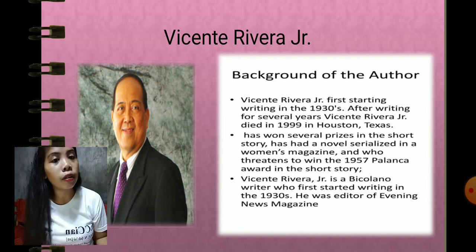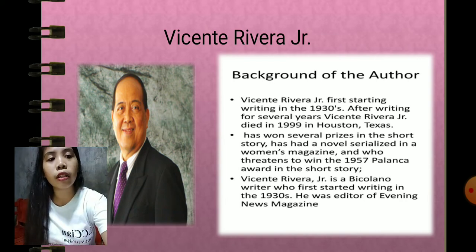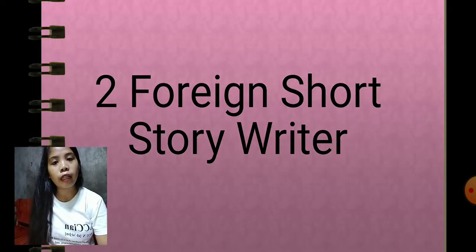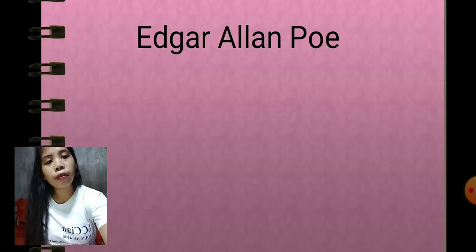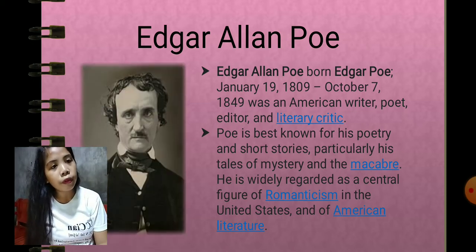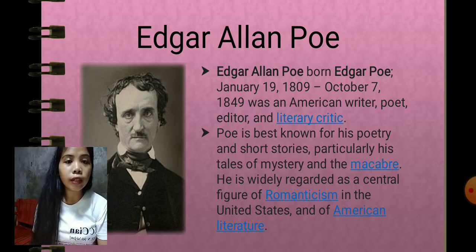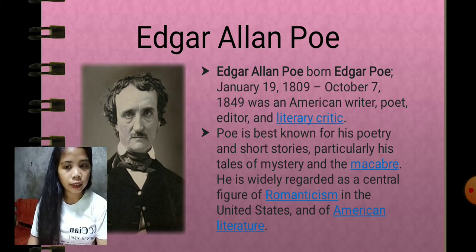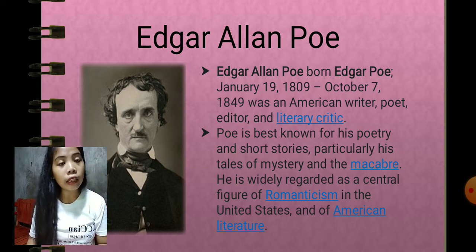We are done with our two local short story writers — Ronnie V. Diaz and Vicente Rivera Jr. Now let's go to our two foreign short story writers. The first one is Edgar Allan Poe. Edgar Allan Poe was born on January 19, 1809, and died on October 7, 1849.